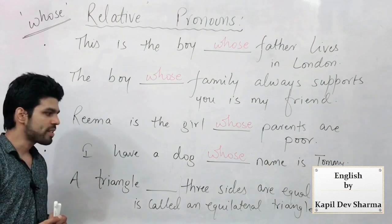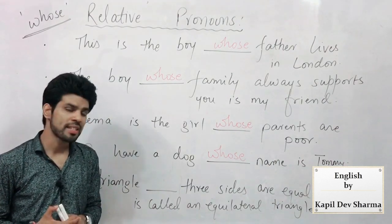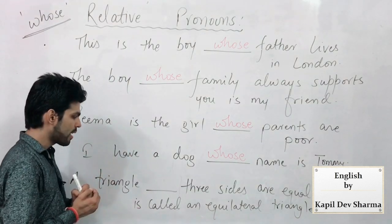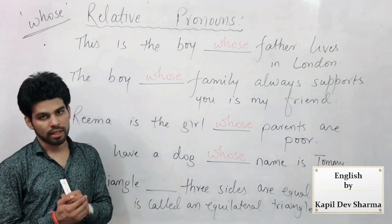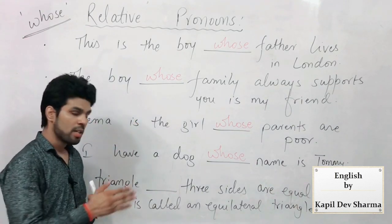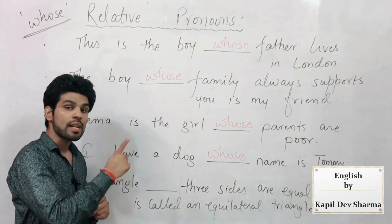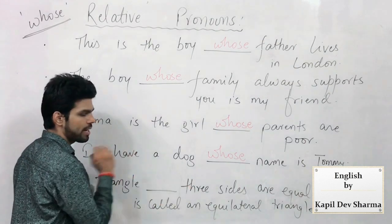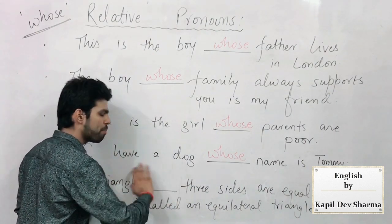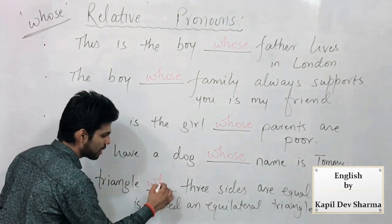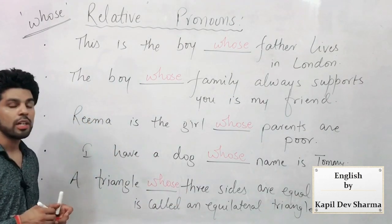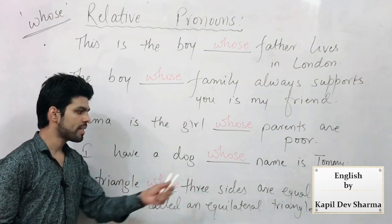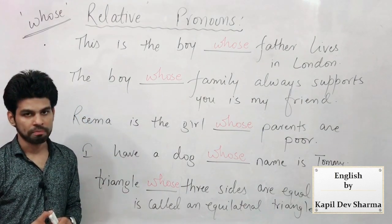Similarly: 'A triangle ___ three sides are equal is called an equilateral triangle.' Mathematics ki yaad dilata hai — one of my favorite subjects. 'A triangle ___ three sides are equal is called an equilateral triangle' — voh triangle jiski teeno side equal hoti hai use ye triangle kaha jata hai. Jiski do, teen, paanch — whatever — but its sides are being talked about: his right is shown. So to show possession, you again use 'whose.' I repeat: 'A triangle whose three sides are equal is called an equilateral triangle.'